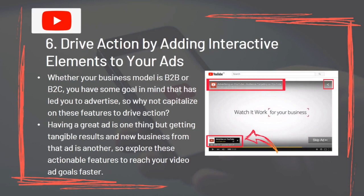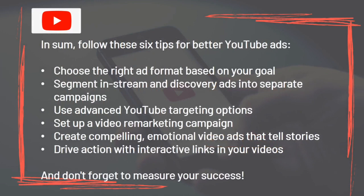Tip 6: Drive action by adding interactive elements. Whether your business model is B2B or B2C, capitalize on these features to drive action. Having a great ad is one thing, but getting tangible results from that ad is another. In summary, the six tips for better YouTube ads are: choose the right format based on your goal, segment in-stream and discovery ads, use advanced targeting options, set up a remarketing campaign, create compelling emotional video ads that tell stories, and drive action with interactive links. Don't forget to measure your success.